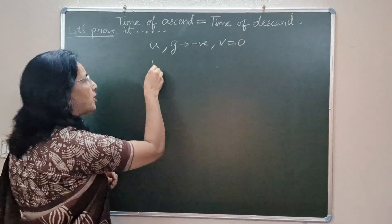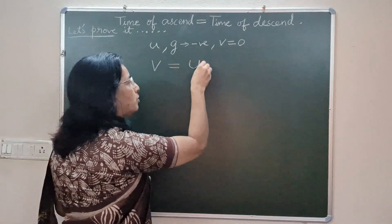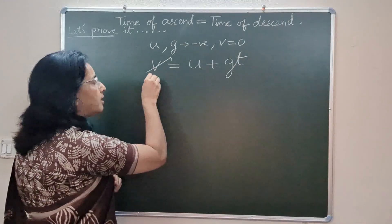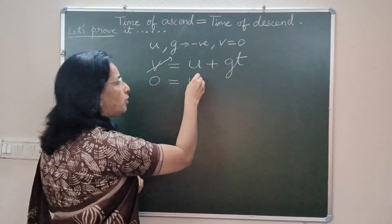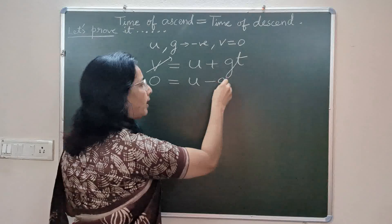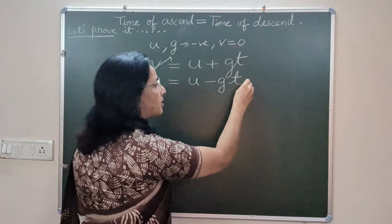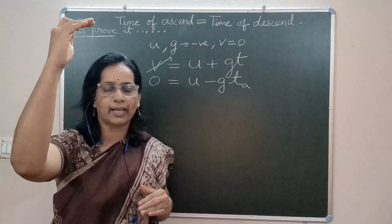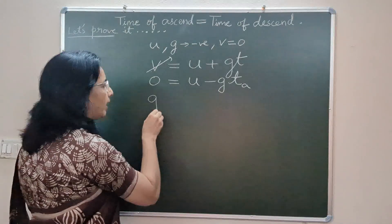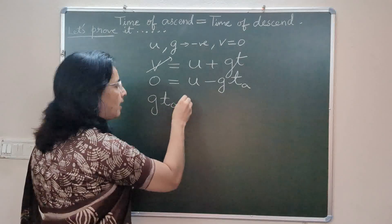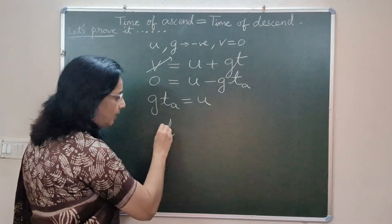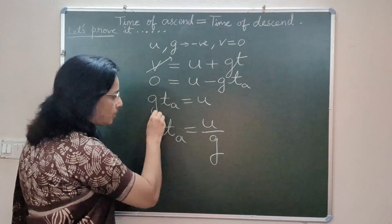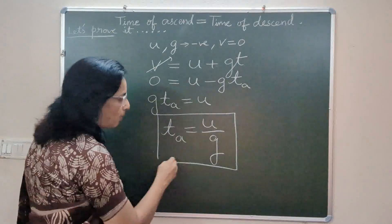We will use the first equation of motion: v = u + gt. Since final velocity is zero, we get 0 = u − g·ta, where ta is the time of ascent — the time taken by the object to reach the maximum height. Transposing this, we get g·ta = u, and finally the time of ascent is u/g.